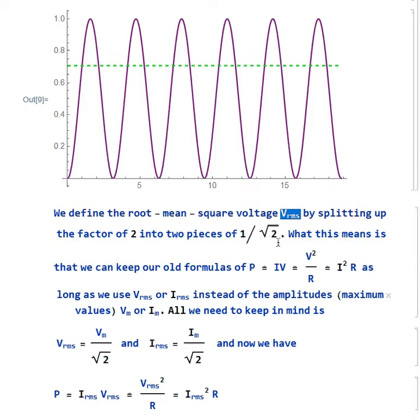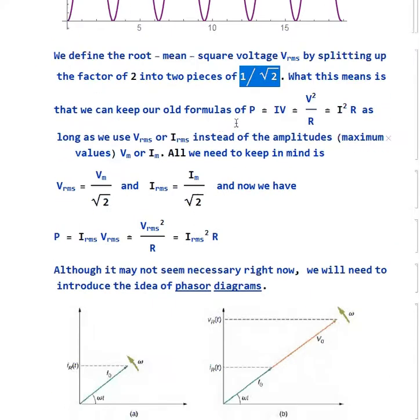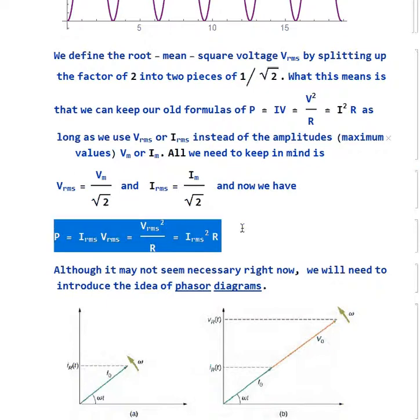Now, the way we keep the look of the old formula is to break this factor of 2 into 1/√2, two pieces like that. So what that means is we can keep the old formulas, P = IV = V²/R = I²R, as long as we say the I and V we're talking about are V_RMS or I_RMS. We're using that instead of the amplitude, the maximum value. The only thing we have to keep in mind is the connection between RMS and maximum value is 1/√2. So now we can use the same formulas. We don't have to worry about dragging a half everywhere we go.